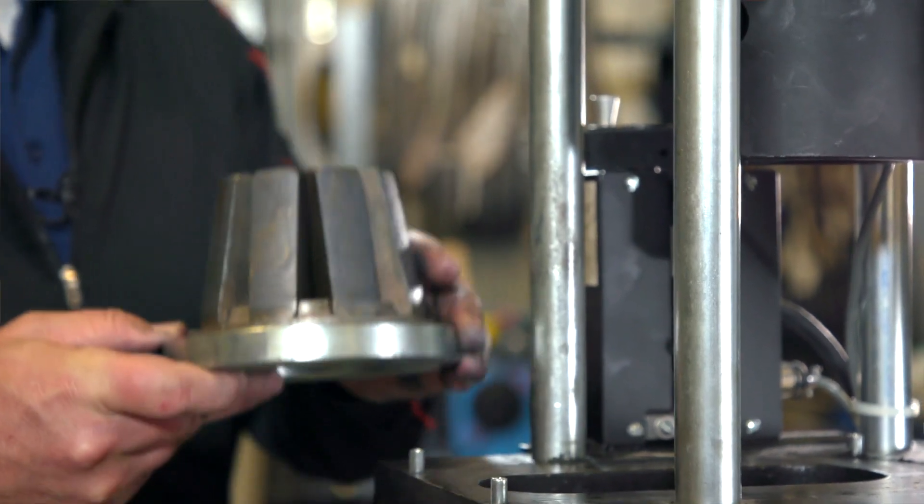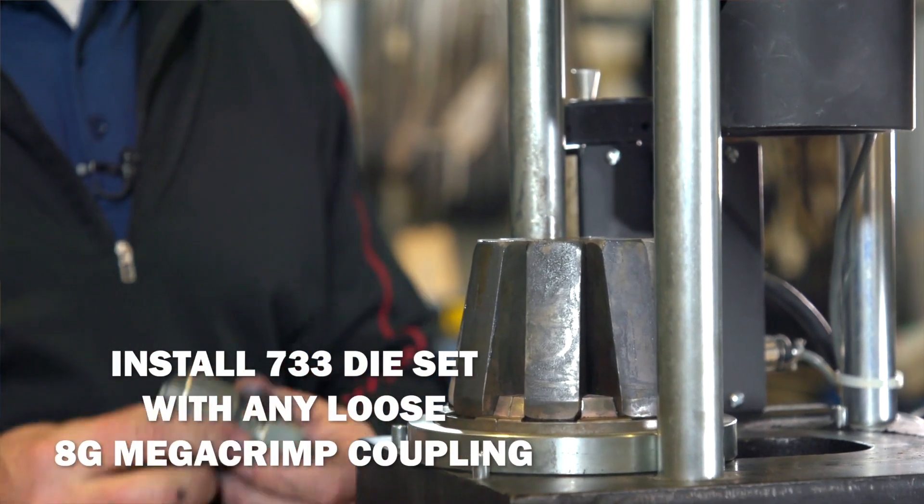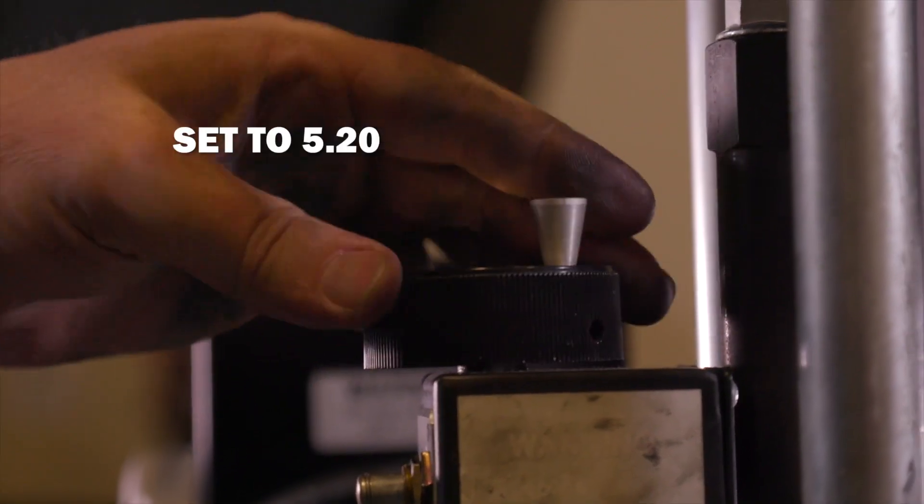To calibrate the machine, install the 733 die set and use any loose 8G megacrimp coupling to crimp. Set the digital readout setting to 5.20.